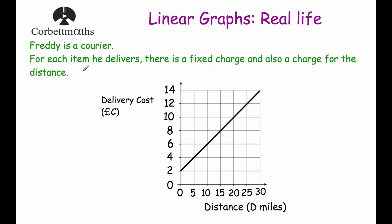Our last example: Freddie is a courier and for each item he delivers there's a fixed charge plus a charge for distance. The vertical axis is delivery cost C in pounds (0, 2, 4, 6, 8, 10, 12, 14), and the horizontal axis is distance D in miles (0, 5, 10, 15, 20, 25, 30). The graph starts at two pounds, so the fixed charge is £2 for zero miles. It rises to a cost of £14 for 30 miles.